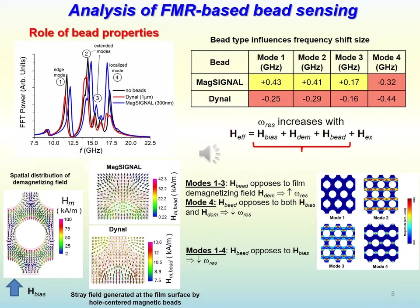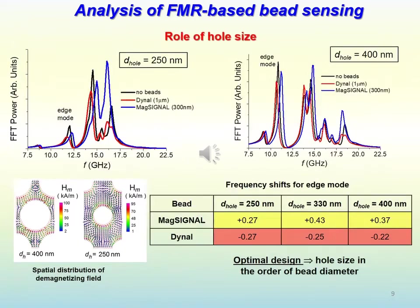For the larger bead, the stray field opposes the bias field for all modes, thus leading to a decrease in the ferromagnetic resonance frequencies for all modes.